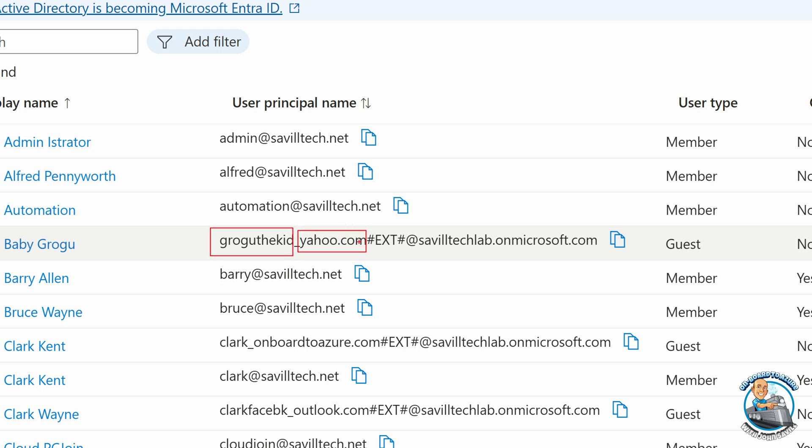So this was a Yahoo. We can see it's hash ext hash and then my Entra tenant. And we'll see that that's in common for all of them, whatever their original was, it just gets converted to this hash. So that's what their UPN is.